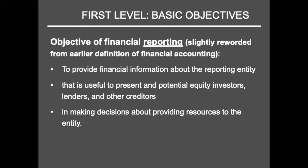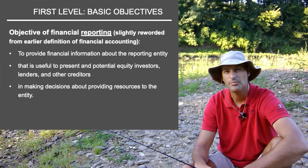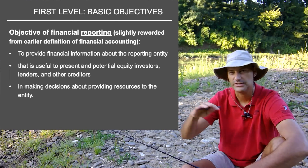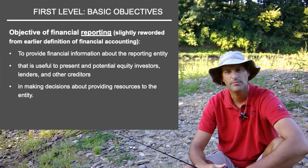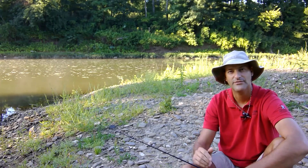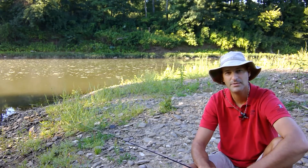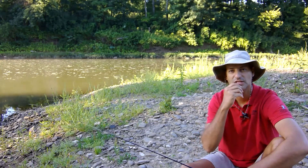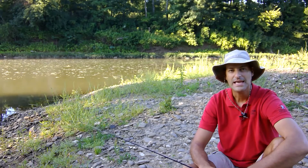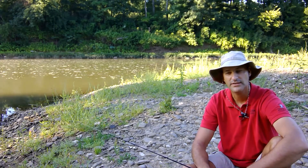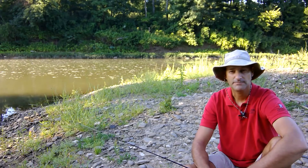The objective of financial reporting is to provide financial information about the reporting entity that is useful to present and potential equity investors, lenders, and other creditors — frankly, to anyone who wants to use the information — in making their decisions about providing resources to the entity. Those are the capital providers. That's the formal definition that comes out of these concept statements. I'm going to finish re-rigging this rod and we'll cover the rest of the material in a minute when I can get back to fishing.